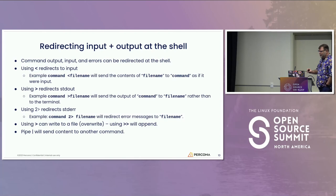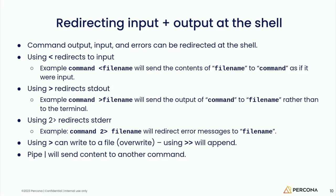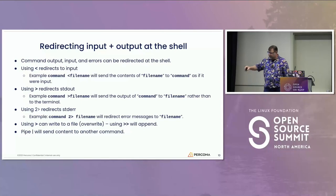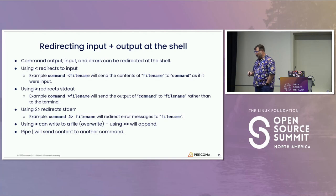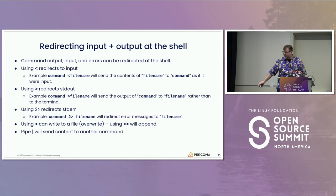Redirecting input and output — everybody knows the carets redirect text one way and the other. Two carets will direct things to standard error, and you know how to write to a file and append to a file. If you want to append something to a file, use the double arrows. This presentation will be available as a PDF at dissociatedpress.net.